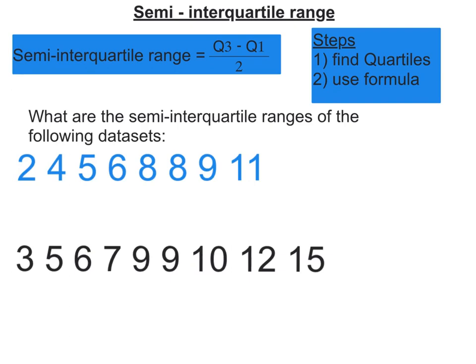In this video, we're going to work out the semi-interquartile range of a group of data. We're going to use this formula here: Q3 minus Q1 all over 2. Steps: find the quartiles, then use this formula.